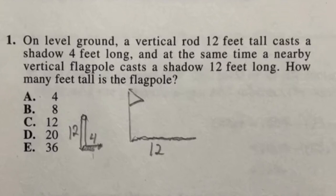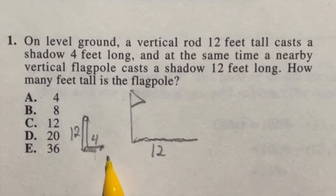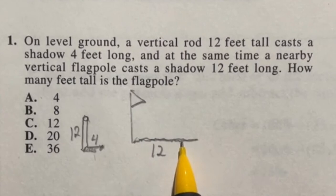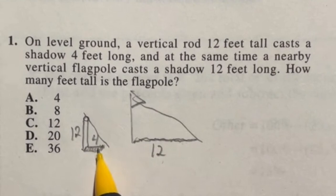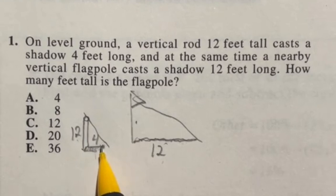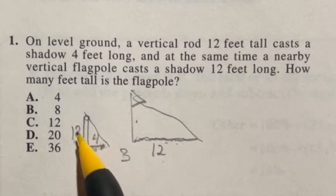On this question we're looking at a vertical rod that's 12 feet tall and it casts a 4 foot shadow. At the same time there's a flagpole that we don't know how big it is but it casts a 12 foot shadow. Well what this is is actually a similar triangle question, meaning that the ratios between these two stay the same. So if I'm going from 4 to 12 here I should be able to make the same jump from here to here. Well if you go from 4 to 12 you're multiplying by 3. So I have to multiply this guy by 3 as well. Well 12 times 3 is going to give me 36. So this flagpole is 36 feet tall.